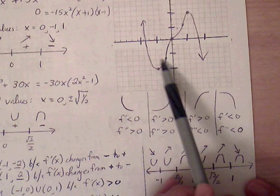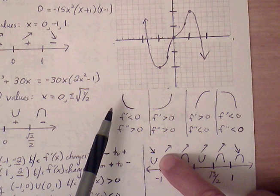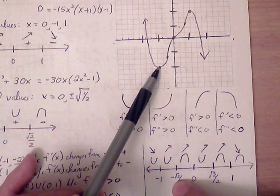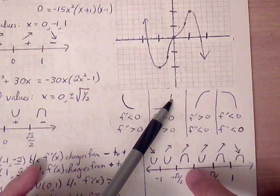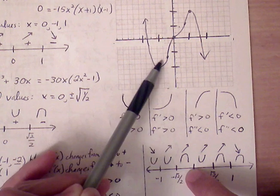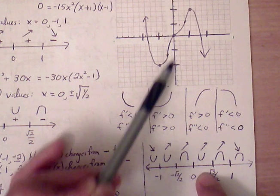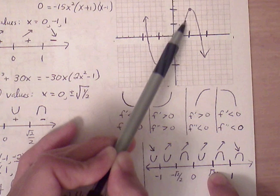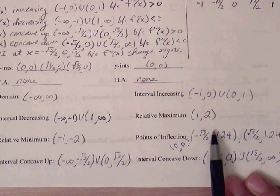We connect the five plotted points using the appropriate curvature in each region. To the left of negative 1: negative slope, concave up. From negative 1 to negative root(2)/2: increasing slope, concave up. From negative root(2)/2 to 0: increasing slope, concave down. From 0 to root(2)/2: increasing slope, concave up. From root(2)/2 to 1: increasing slope, concave down. Beyond 1: decreasing slope, concave down. This completes the curve sketch, and we can fill in all the information found from the graph.